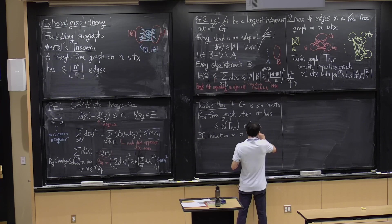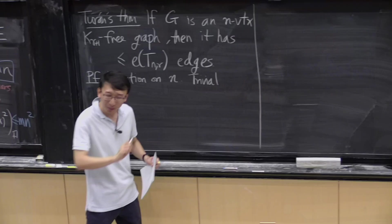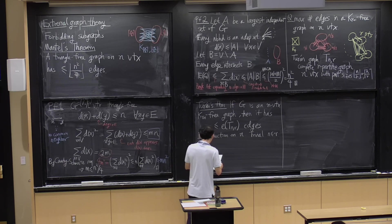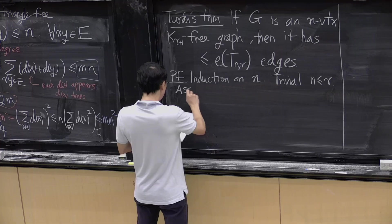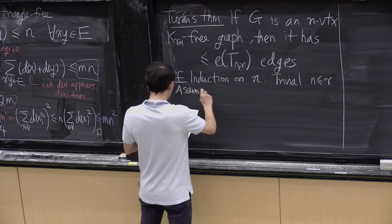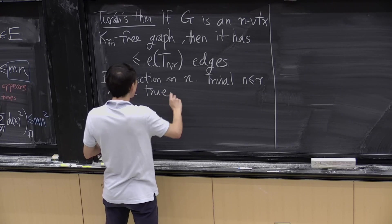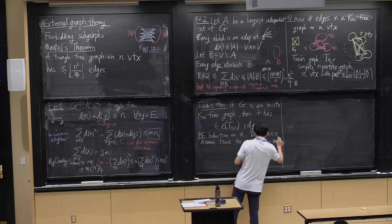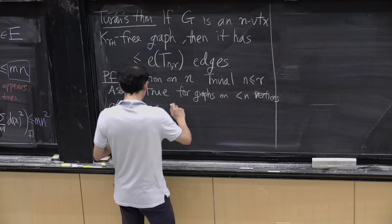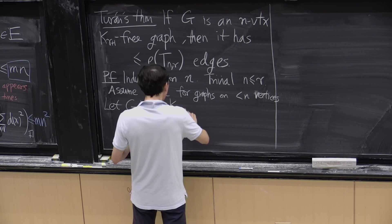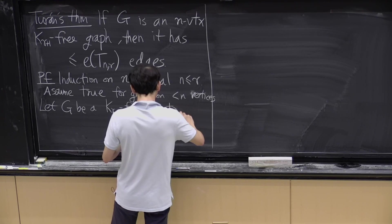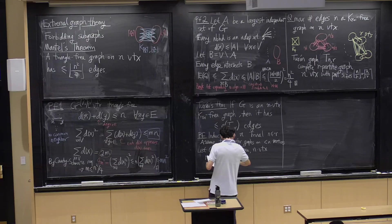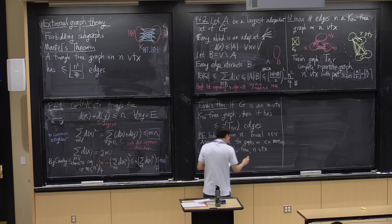When n is small, this problem is basically trivial. If n is at most r, you can have the complete graph on r vertices. So let's assume we're not in that case. By induction hypothesis, assume the theorem is true for all graphs on fewer than n vertices. Let G be a K_{r+1}-free graph on n vertices, and assume G has the maximum possible number of edges.